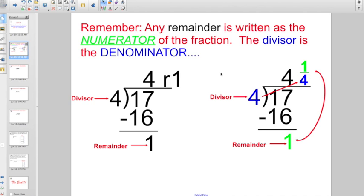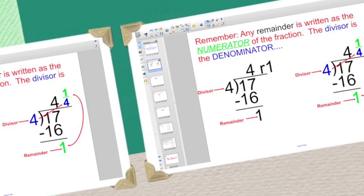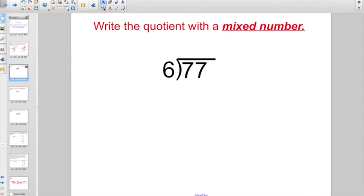But they're also going to ask you to start applying that in different word problems. So let's start off with something easy, though, since we're just coming back from vacation. Write the quotient with a mixed number. Okay, always figure out where you're going to start dividing. 6 divides into 7 one whole time. Multiplies back for 6, and it subtracts for 1.